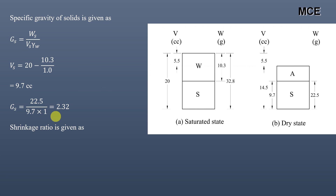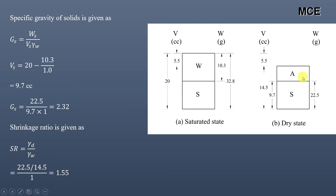For the shrinkage ratio from the phase diagram: shrinkage ratio = dry unit weight / unit weight of water = (Ws / V_dry) / γw = 22.5 / 14.5 / 1 = 1.55. Here V_dry is the total volume of soil in the dry state (14.5 cm³), not the volume of solids. This matches the earlier result.